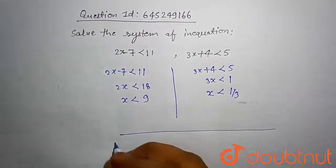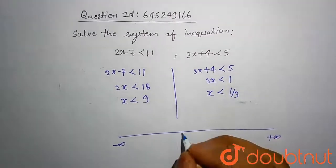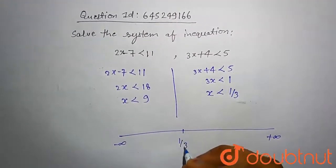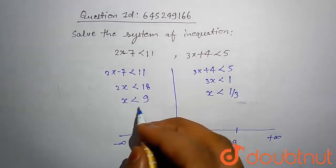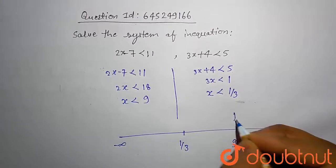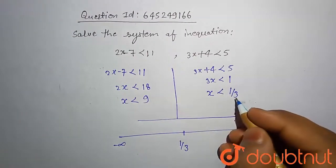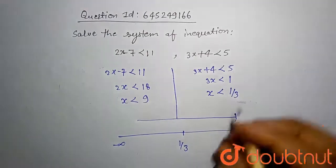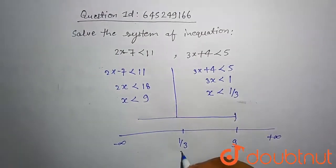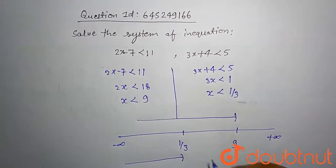This is our real number line. x is minus infinity to plus infinity. This is 1 by 3, and this is 9. First condition says that x is less than 9, excluding 9. And second condition says that x is less than 1 by 3, excluding 1 by 3. Hence, intersection of these two is x is less than 1 by 3.